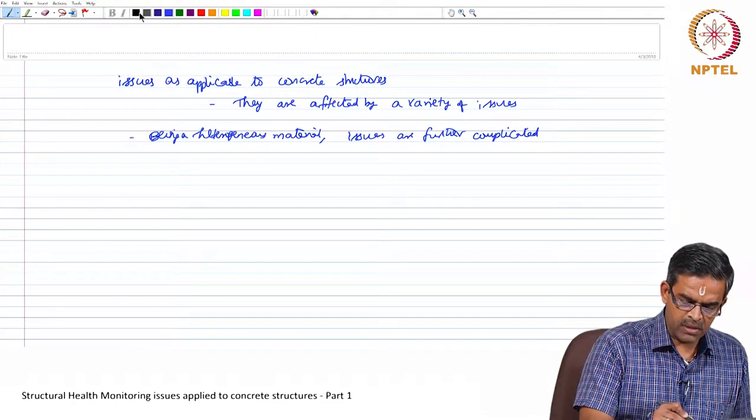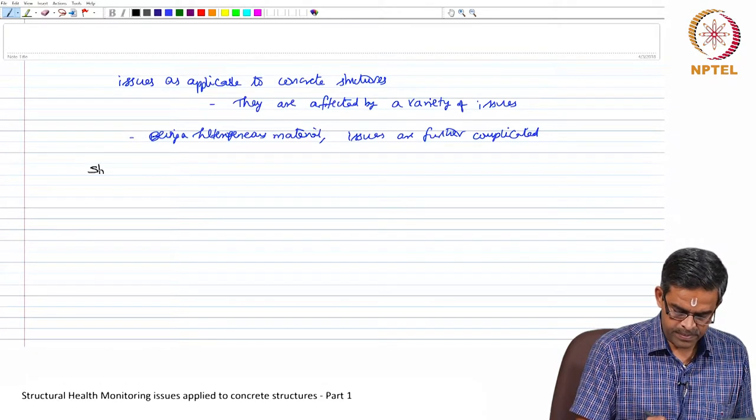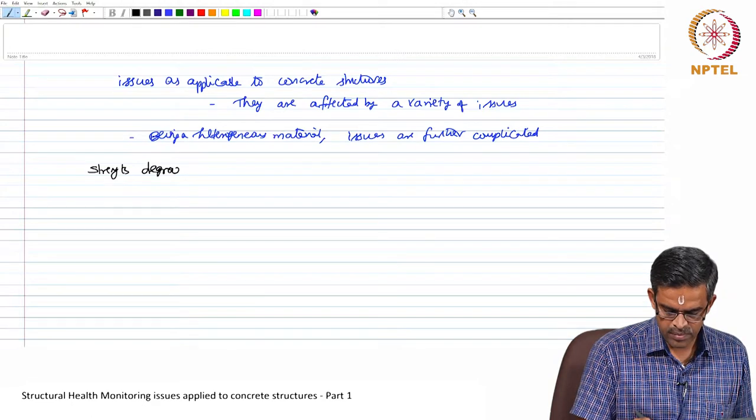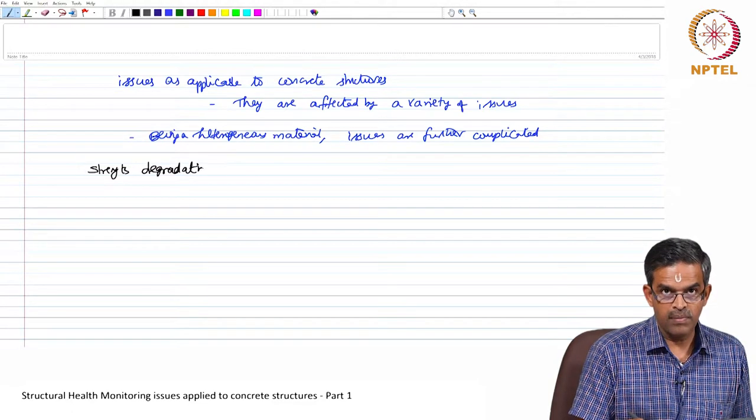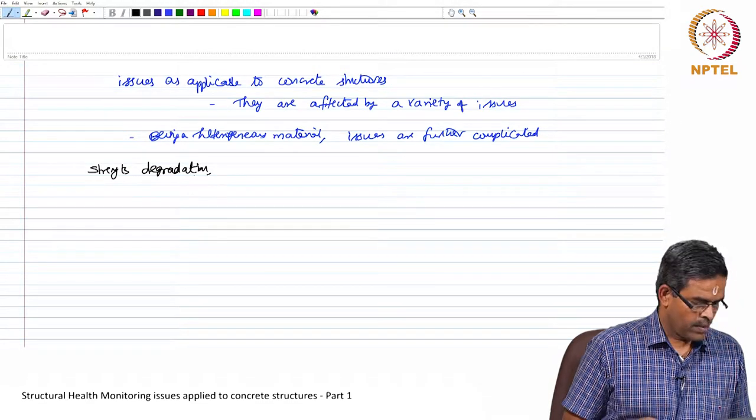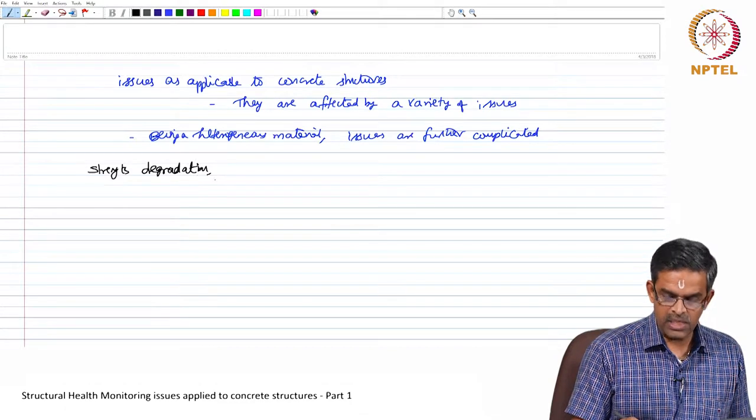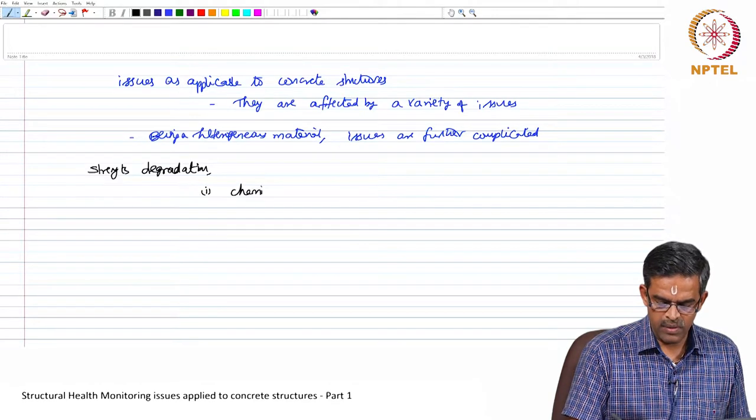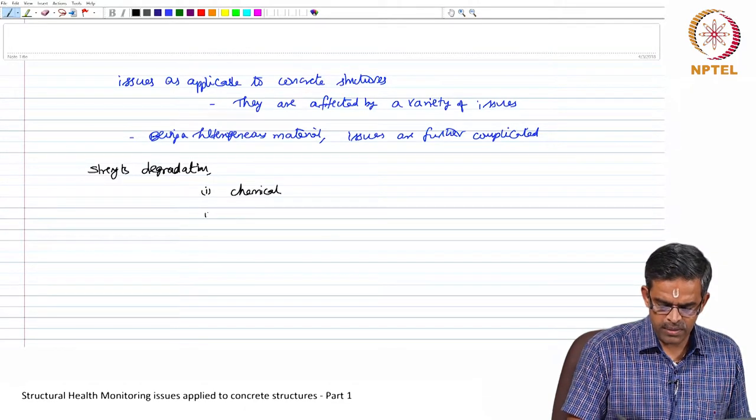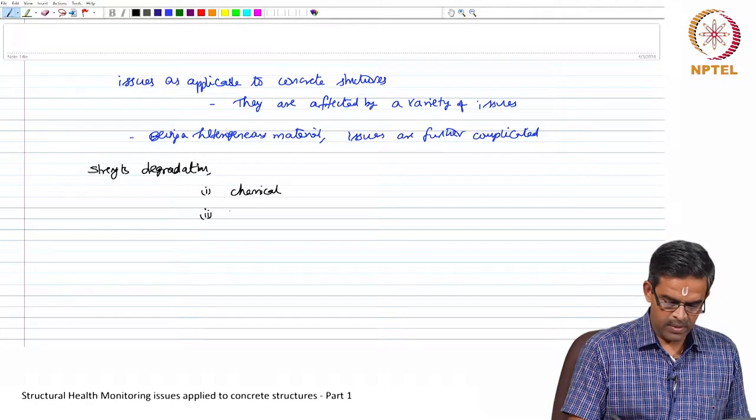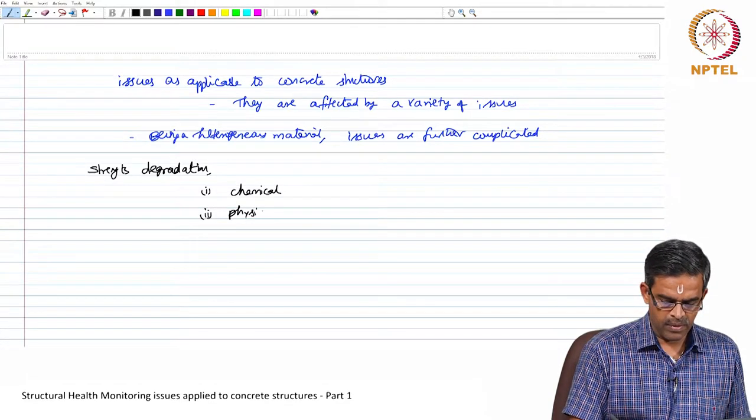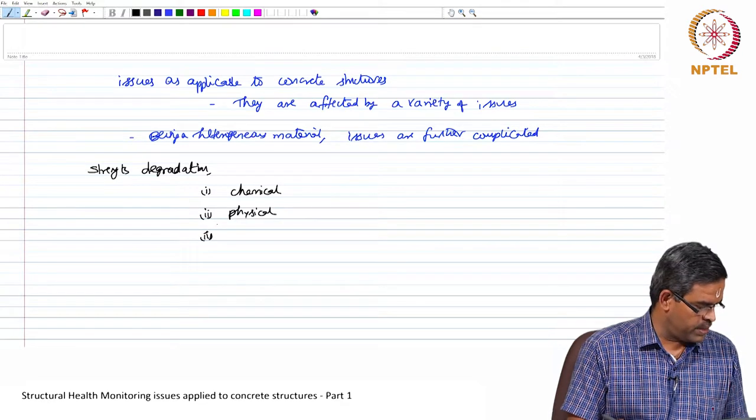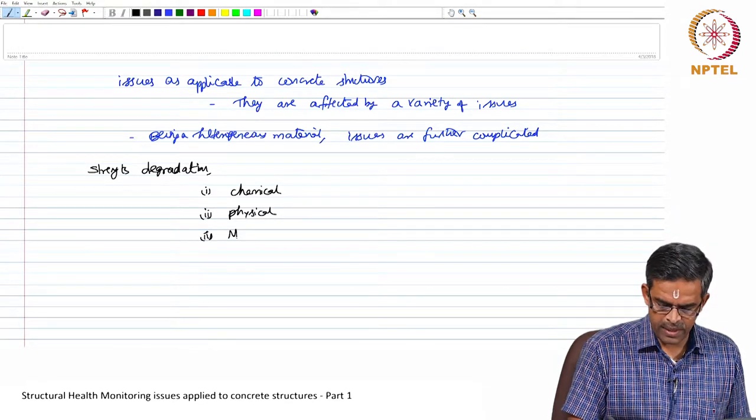When we talk about strength degradation, concrete has several ways by which the strength is degraded. One is chemical degradation, next is physical degradation, and third could be the mechanical degradation.